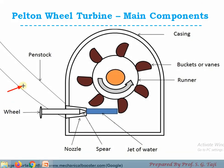The first component is the penstock. Penstock is used to take the water from the reservoir to the inlet of the turbine. At the end of the penstock there would be a nozzle provided — a tapered pipe section where the area of pipe section would get reduced. The function of this nozzle is to convert the pressure energy available in the penstock into useful kinetic energy, so water flowing through this nozzle gets accelerated and strikes on the bucket in the form of a jet with high kinetic energy.